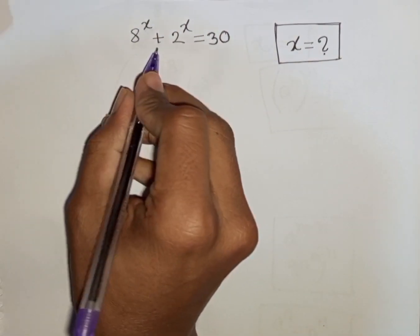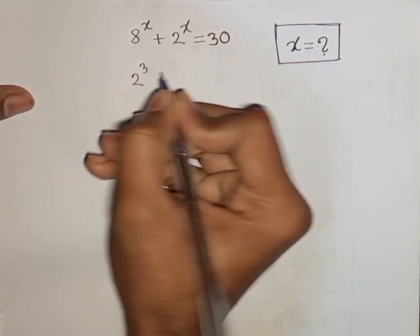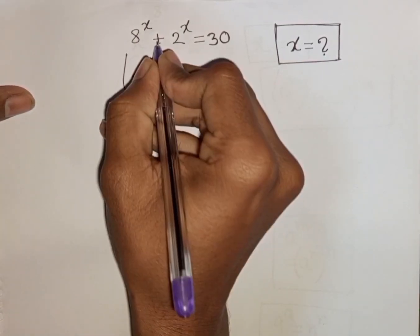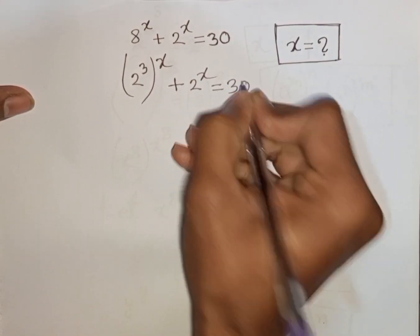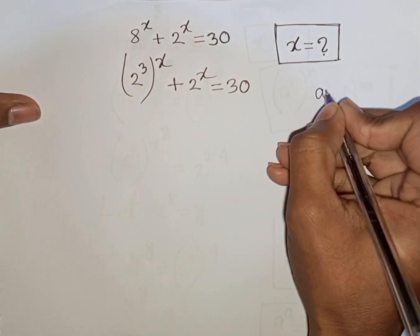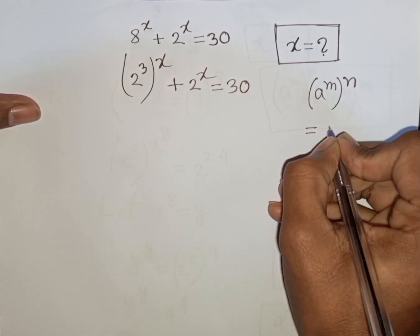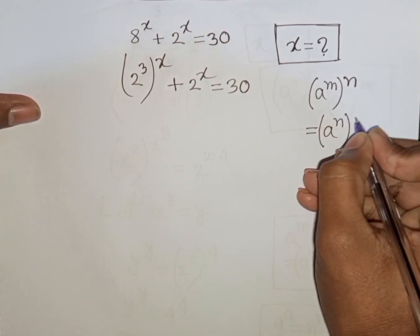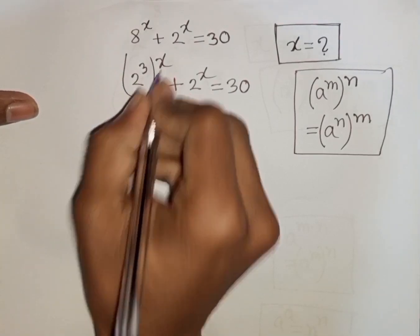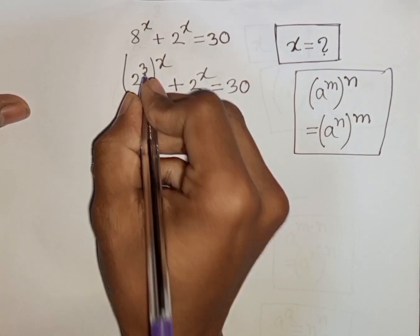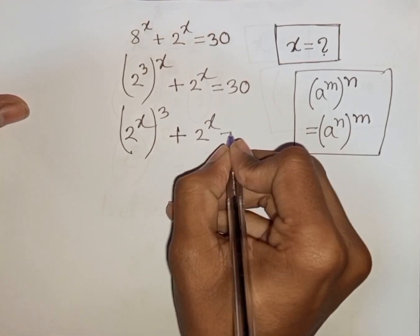How to solve 8^x + 2^x = 30, find the value of x. We have 8^x, which is the same as 2^3, then bracket power of x, plus 2^x, is equal to 30. We can apply the exponential rule that a^m bracket power n equals a^n bracket power m, so we can write 2^x bracket power 3 plus 2^x equals 30.